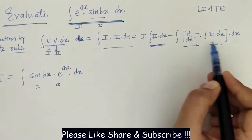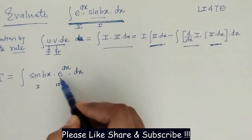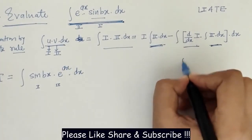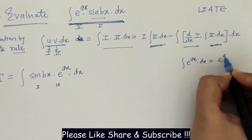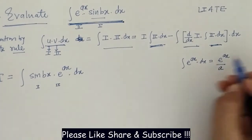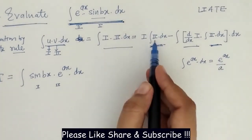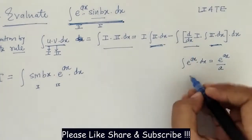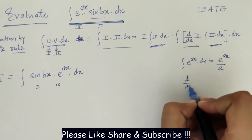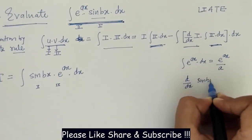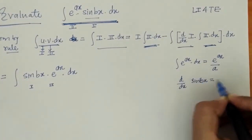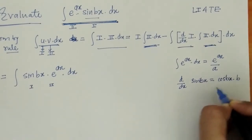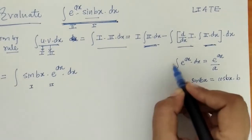We need to find the integration of the second function, which is e raised to ax, and that equals e raised to ax divided by a. We also need the derivative of the first function: d/dx of sin(bx) equals cos(bx) into b, where b is a constant.